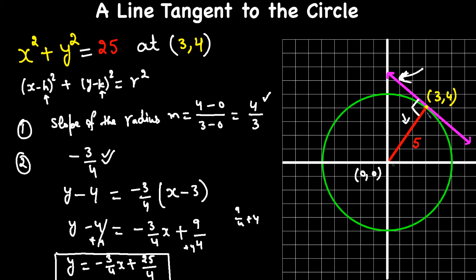So this pink line has equation y = -3/4 x + 25/4. To recap: first, write the slope of the radius. Second, since the tangent and radius are perpendicular, find the negative reciprocal slope, which gave us -3/4. Third, use point-slope form y - y₁ = m(x - x₁), plug in the tangent point and slope, and solve.